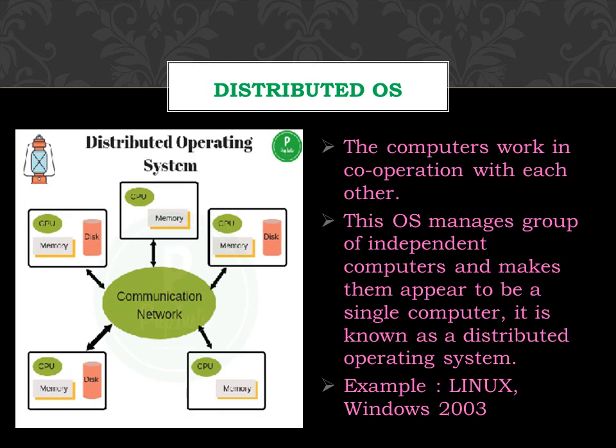Distributed operating system: computers work in cooperation with each other. This operating system manages a group of independent computers and makes them appear to be a single computer. An example of a distributed operating system is Linux and Windows 2007.